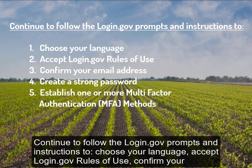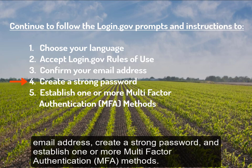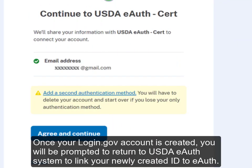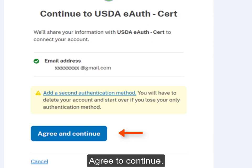Continue to follow the login.gov prompts and instructions to choose your language, accept login.gov rules of use, confirm your email address, create a strong password, and establish one or more multi-factor authentication methods. Once your login.gov account is created, you will be prompted to return to the USDA eAuth system to link your newly created ID to eAuth. Agree to continue.